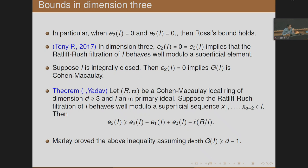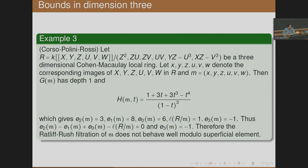One result is: let R be a Cohen-Macaulay local ring of dimension ≥ 3 and I an M-primary ideal. If the Ratliff-Rush filtration behaves well modulo a superficial sequence, then a certain inequality holds. This inequality was previously known only under the condition depth of G(I) ≥ D − 1, so this provides a necessary condition for checking whether Ratliff-Rush behaves well. An example demonstrates: when E_3 = −1 and E_2 − E_1 + E_0 − length(R/M) = 0, the inequality fails, so the Ratliff-Rush filtration of the maximal ideal does not behave well modulo a superficial element.